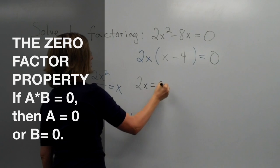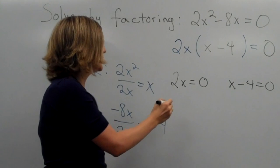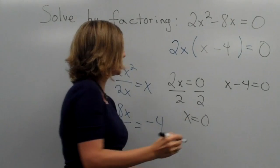So 2x equals to 0, or x minus 4 equals to 0. So if 2x equals to 0, then we can divide both sides by 2, which gives us x is 0.